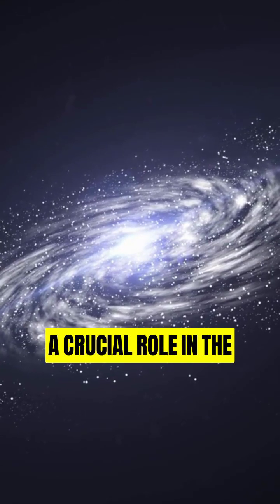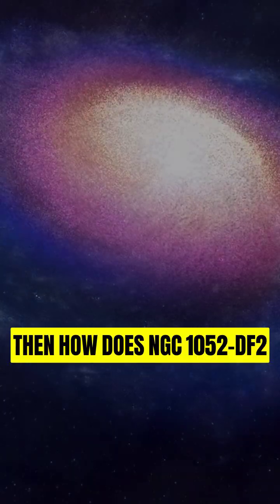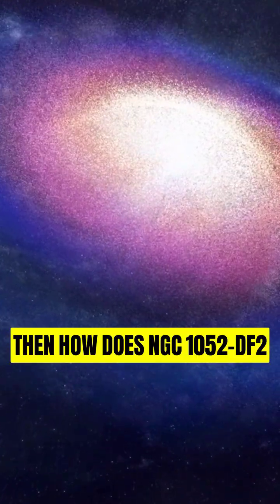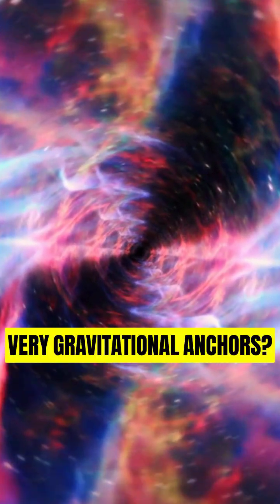If dark matter plays such a crucial role in the formation of galaxies, then how does NGC 1052-DF2 continue to spin without those very gravitational anchors?